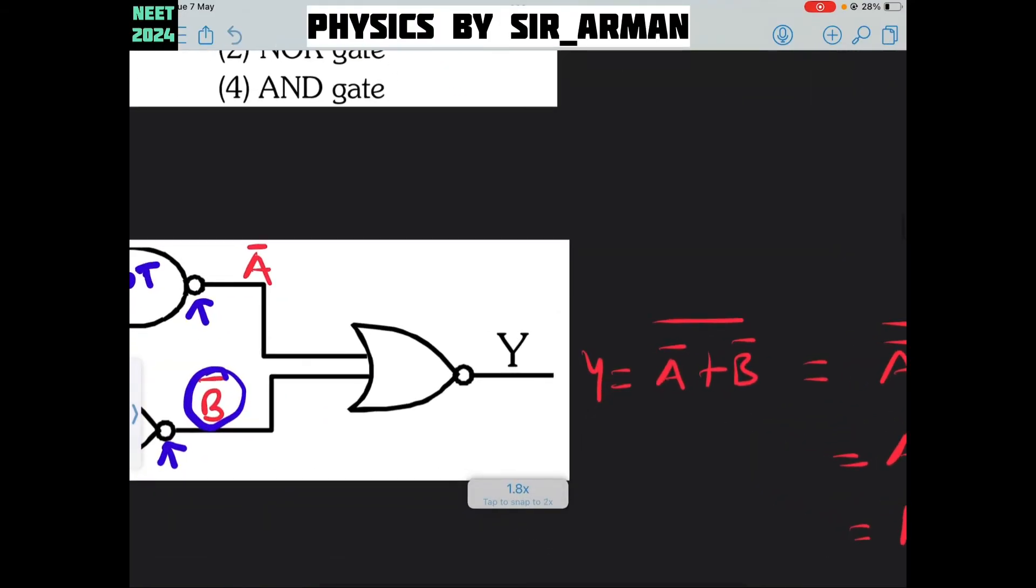Now, here you will find A bar and here you will find B bar, and this behaves as a NOR gate. Why NOR gate? It is actually an OR with a round here, means it behaves as a NOR gate.